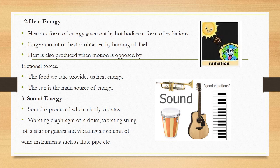One more easy form of energy is sound energy. You can observe sound energies all around you — from a ringing bell, from students, teachers, and birds, and from devices such as television, mobile phones, alarms, washing machines, and toasters. Sound is produced when a body vibrates. You can put your fingers on your neck and feel the vibration of your vocal chords. Vibrating diaphragm of a drum, vibrating string of a sitar or guitar, and vibrating air column of wind instruments such as flute and pipe are all examples.